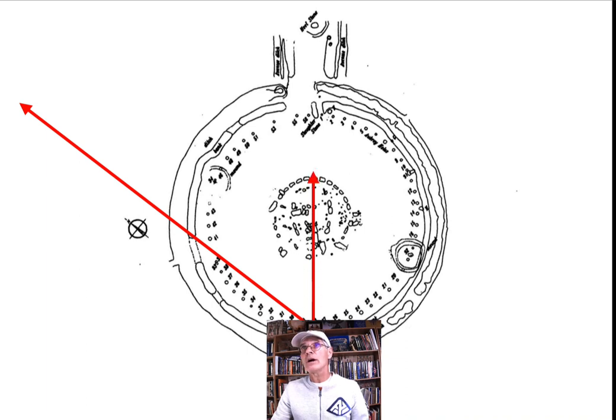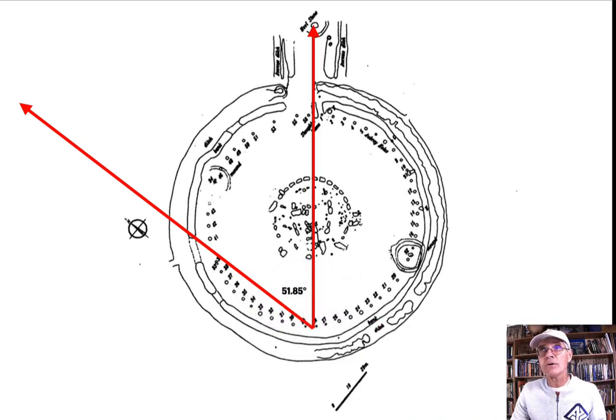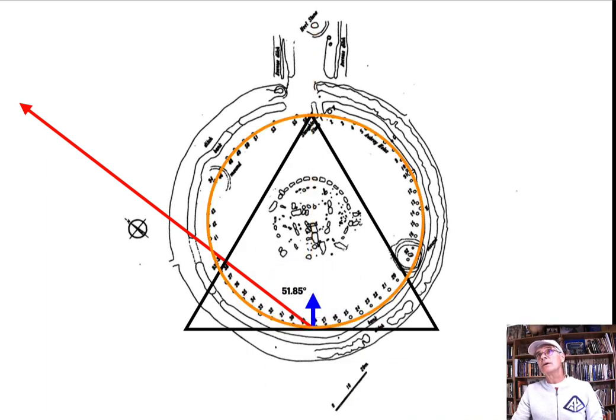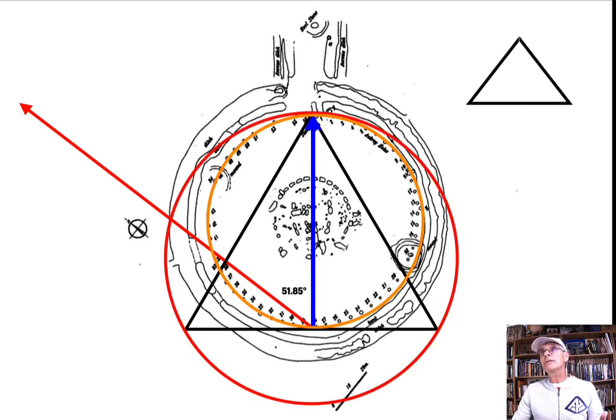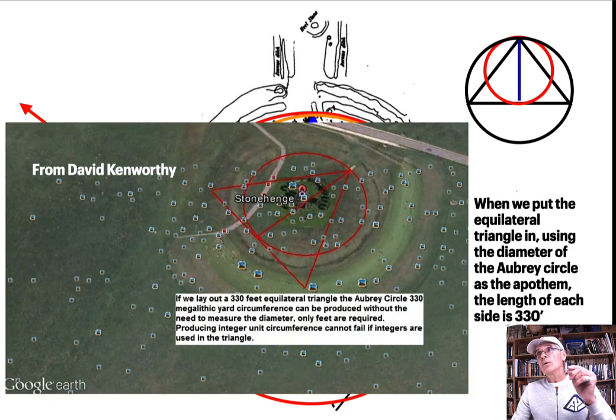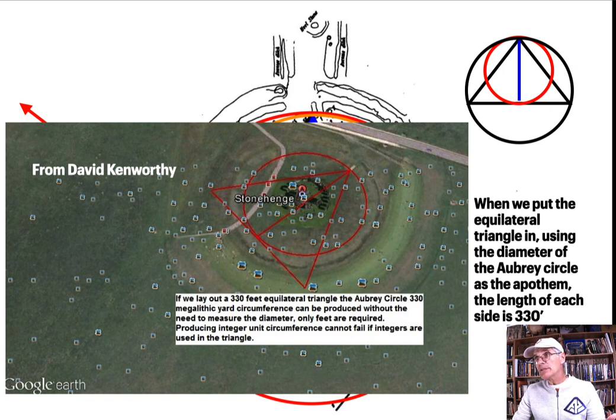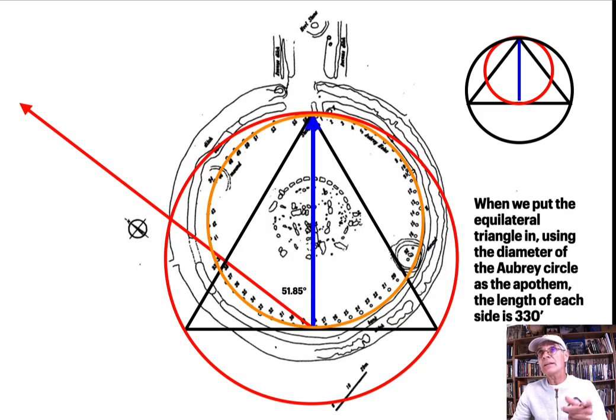Here's the Aubrey circle, there's the equilateral triangle. Here was a breakthrough I got from great metrologist David Kenworthy. When we put the equilateral triangle in using the diameter of the Aubrey circle as the apothem, we're taking that unit circle and laying it down in the earth over Stonehenge. When we do that, the length of each side is 330 feet.